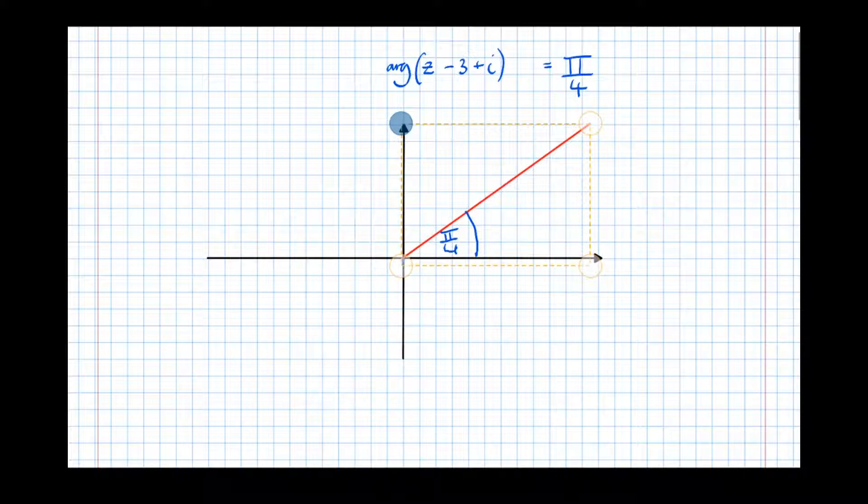So it's telling us to take 3 in the real direction and add 1 in the imaginary direction. But we know better. We know that when transformations happen on the inside of a bracket, just like you learned in year 1 single maths.